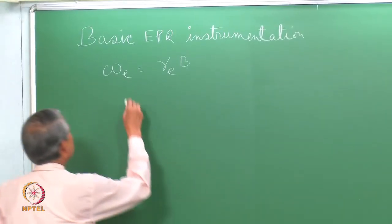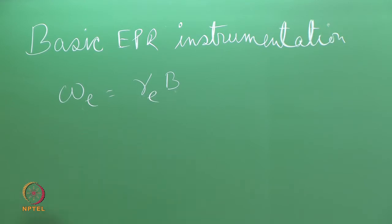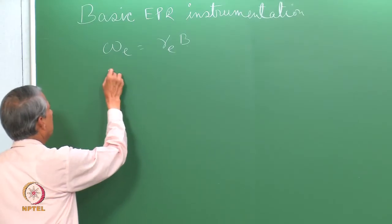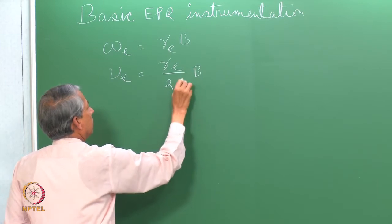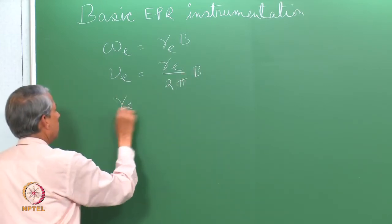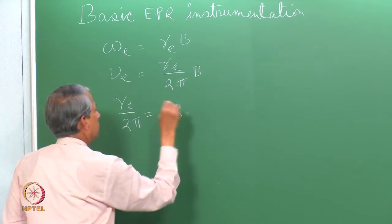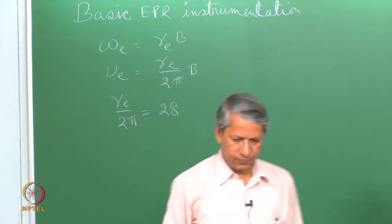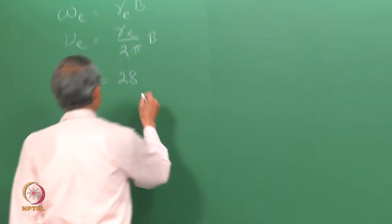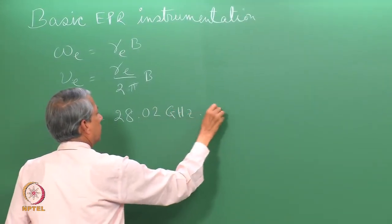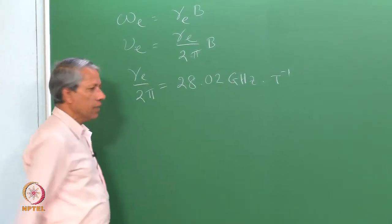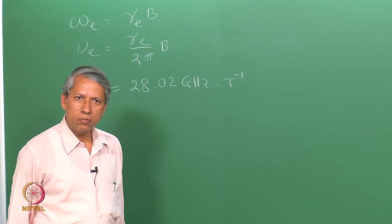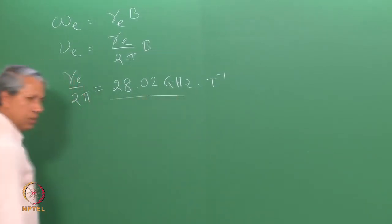This gamma_E gyromagnetic ratio gives the frequency in angular frequency units, that is radians per second. For normal frequency units, nu_E equals gamma_E divided by 2pi times B. The value of gamma_E by 2pi is 28.2 gigahertz per tesla. So a typical frequency will be of the order of several gigahertz if the magnetic field is of the order of 1 tesla, which puts this frequency in the microwave region.